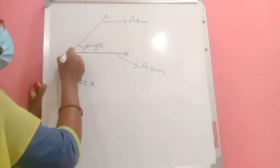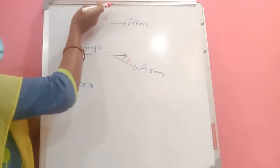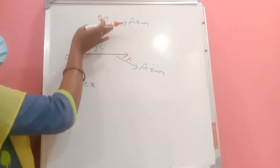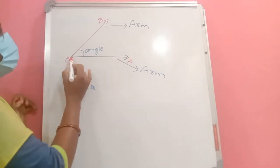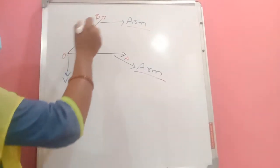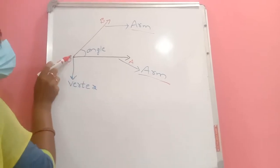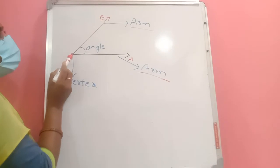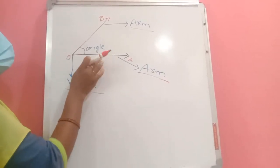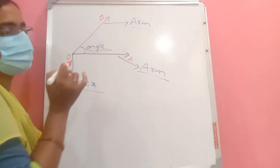An angle is formed when a ray OA rotates to a position OB. The two rays OA and OB are called the arms of the angle. The point O from where the rotation started is called the vertex. The angle is formed between arms OA and OB.